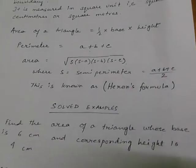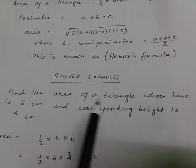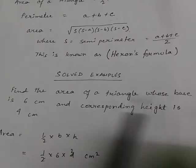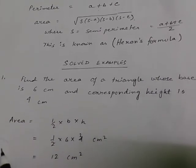Now, we come to some solved examples. Find the area of a triangle whose base is 6 centimeter and corresponding height is 4 centimeter.